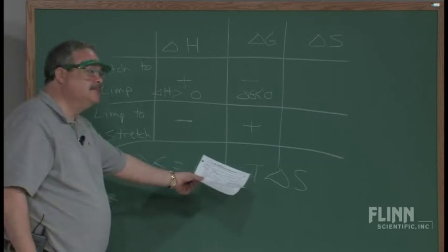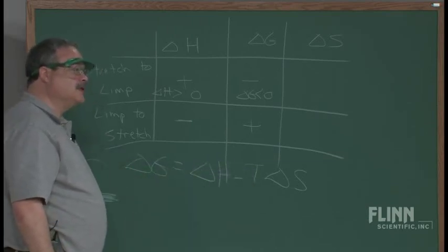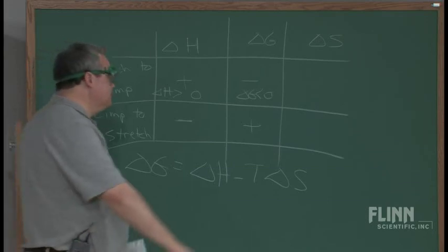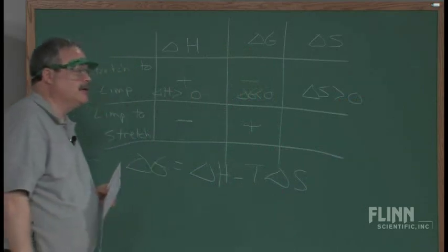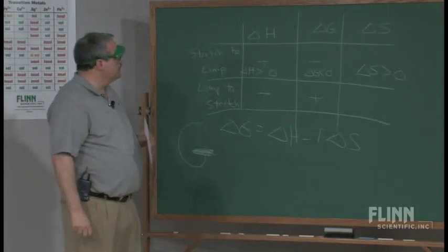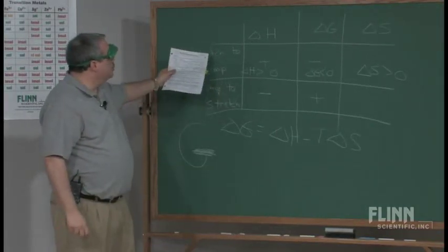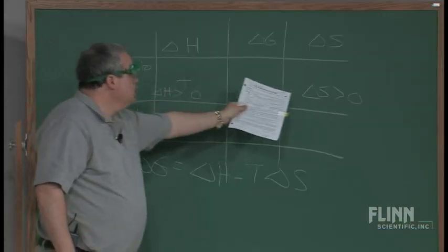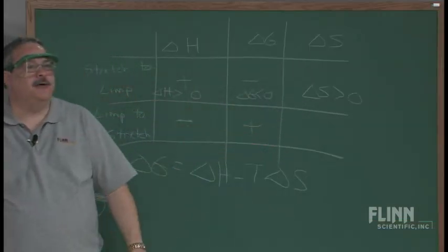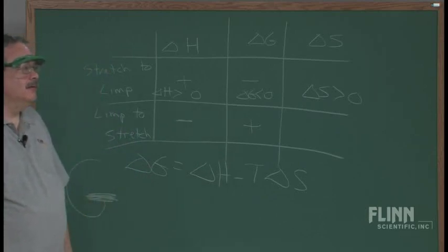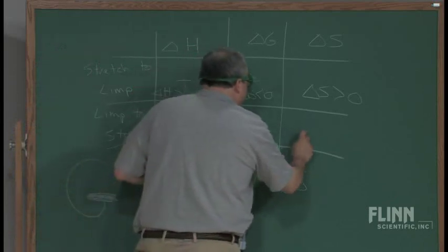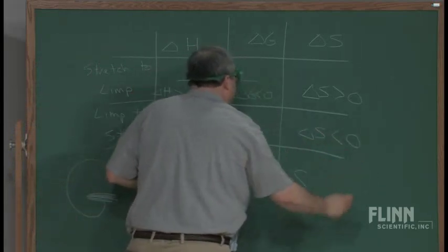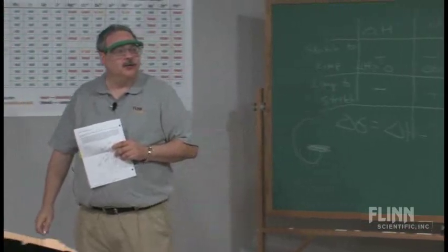If you go by the signs, it's got to be delta S greater than zero, doesn't it? And so what's that saying? That in the stretch to limp form, you had it going to greater entropy. Whereas in this case, the limp to stretch form, we had less entropy. It went to a more ordered situation.